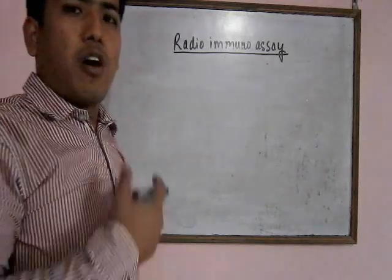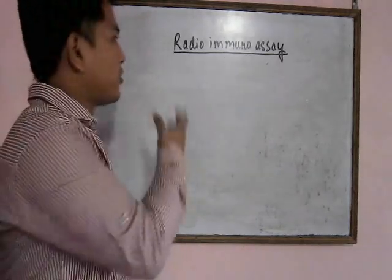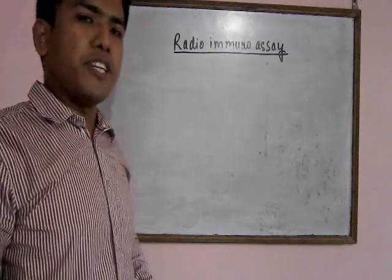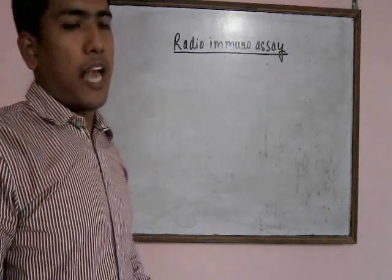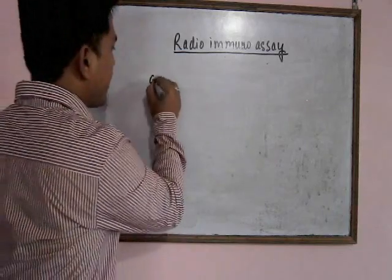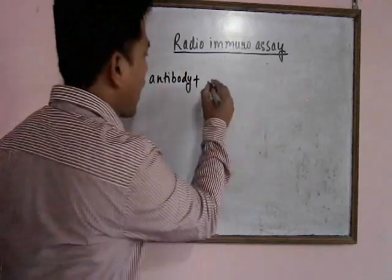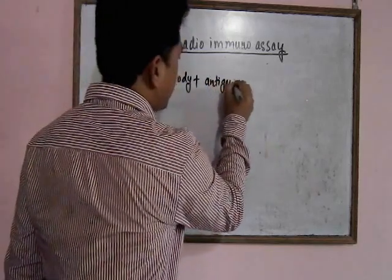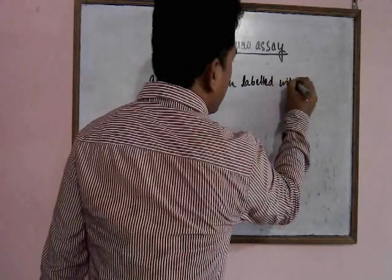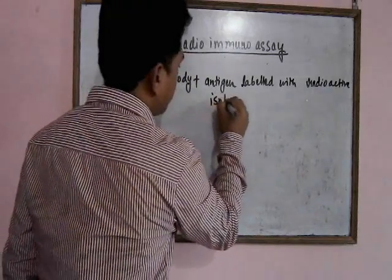Welcome to another episode of the Microbiology Tube. Today we are discussing the radioimmunoassay. In the radioimmunoassay, there is a competitive reaction between the antigen and the antibody. First, we take the antibody and react it with the antigen that is labeled with radioactive isotopes.